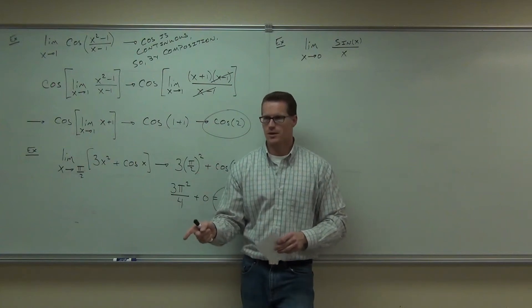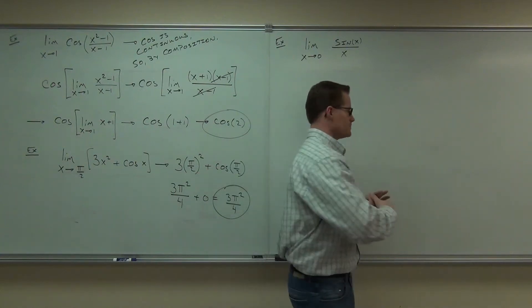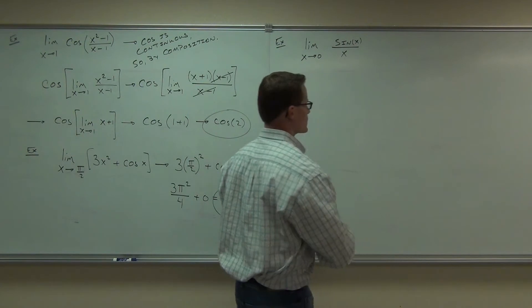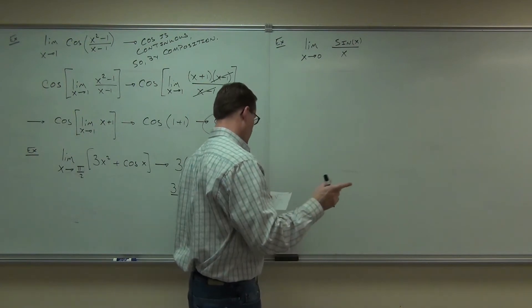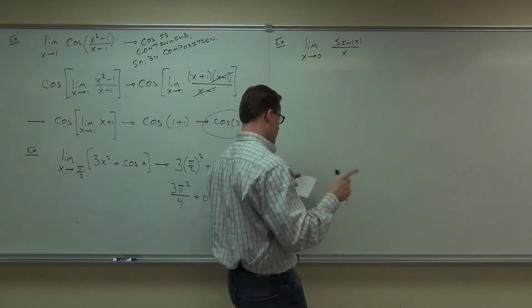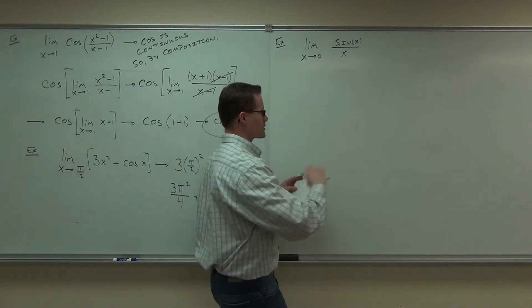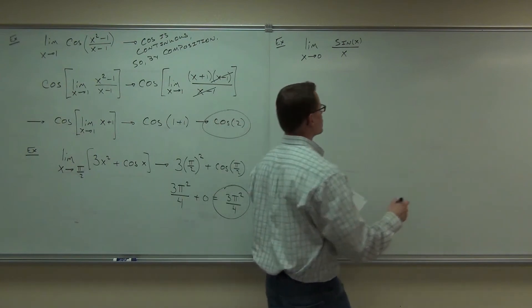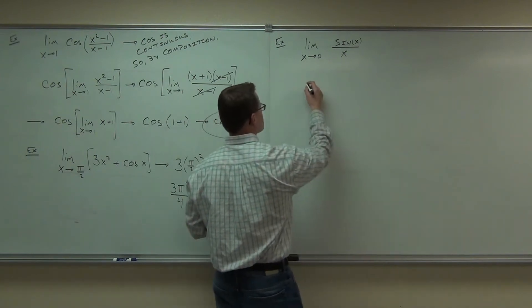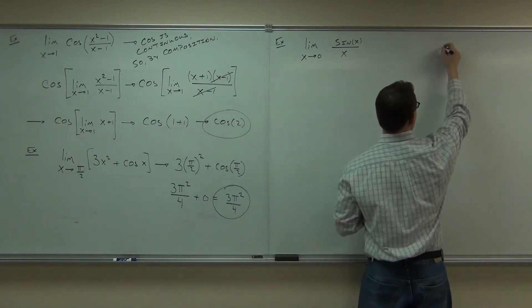We're going to find a way to do it. Are you ready to find a way to do it using some trigonometry? Here's our idea. Let's see if I can do this. First thing we're going to do, we're going to bound this. We're going to make up a triangle, so let's do it right here.